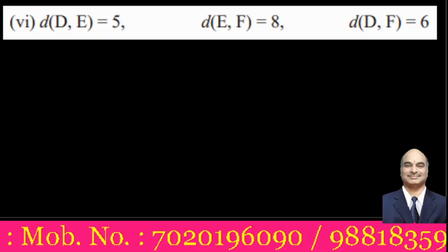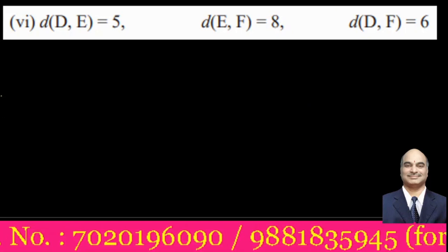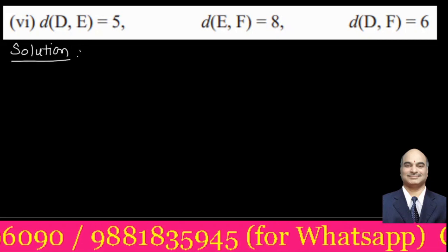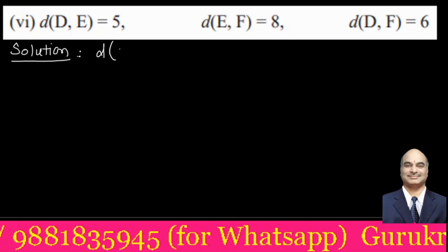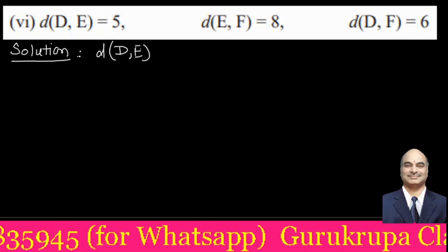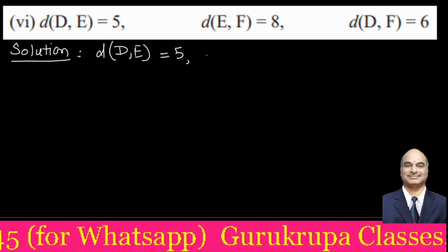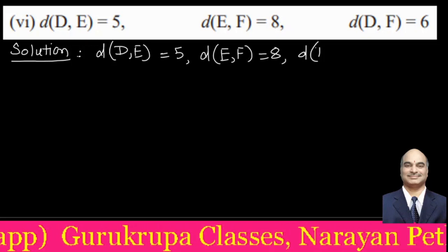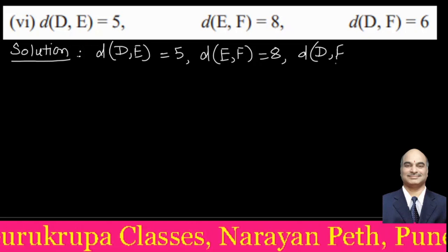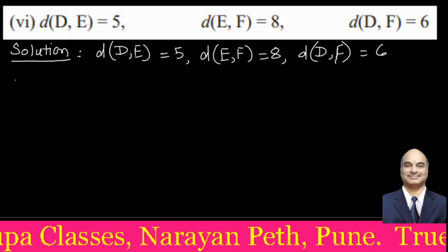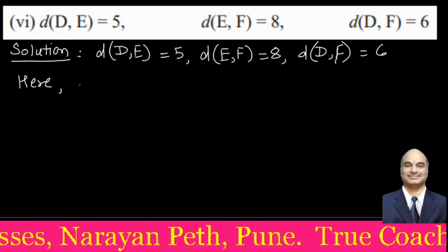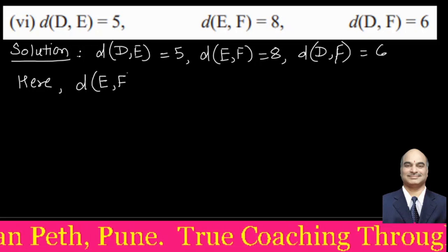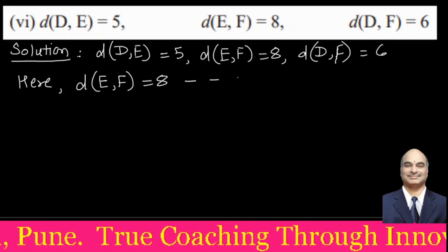Points D, E, F are given. The distances are: distance DE is 5, distance EF is 8, and distance DF is 6. The greatest distance is EF which equals 8 — this is statement 1.